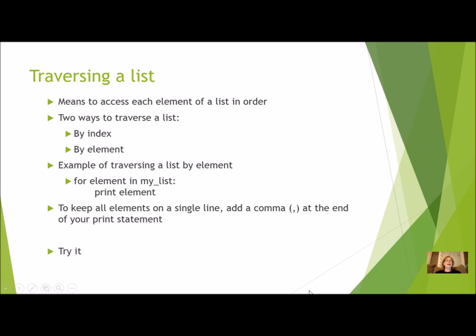When you want to access every element in a list, it's called traversing a list. Traverse is like travel. Traversing a list, traveling a list. I want to access each element in order because a list is sequential. So traversing means to access each element of a list in order from the beginning to the end usually, or you can go in reverse order. There are two ways to traverse a list. You can do it by index, because you know that every element has an index, but you can also do it by element, which is kind of like a shortcut way.